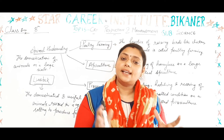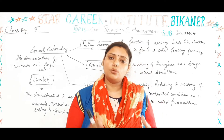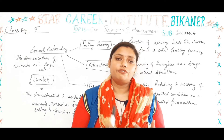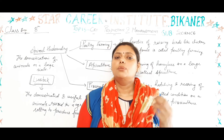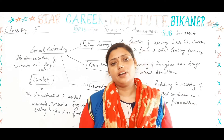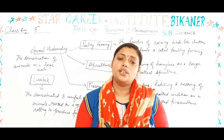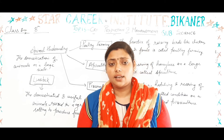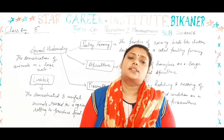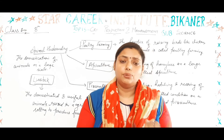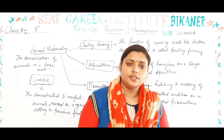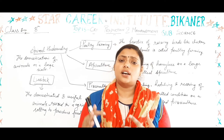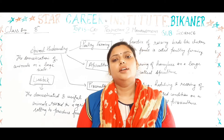Domesticated animals are called livestock. Livestock are the animals we use in animal husbandry for requirements of food, fiber, and labor. Generally, animals used as livestock include camels, cows, buffaloes, chickens, and honey bees.